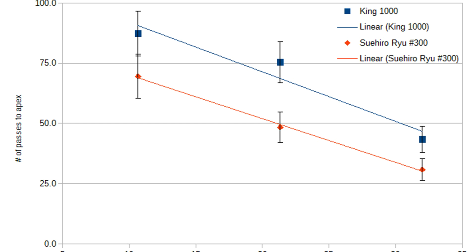So now, if you look at the cutting speed, the Ryu is around 40 to 45 percent faster, and it's consistent over all three pressures. You would expect that it's a more coarse stone, but would you expect only 40 to 45 percent? It's three times as coarse.